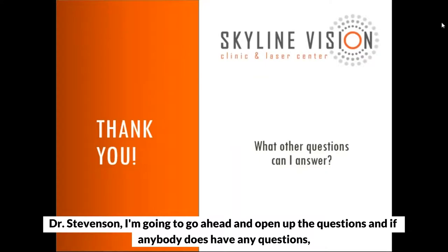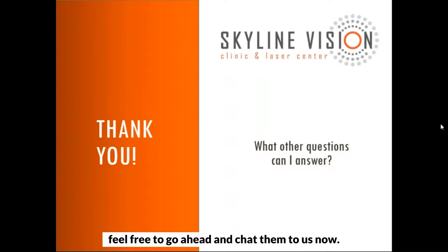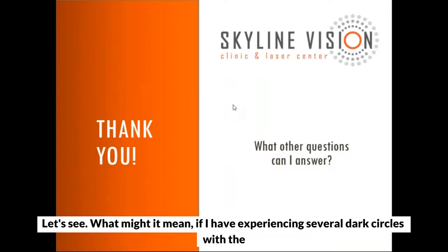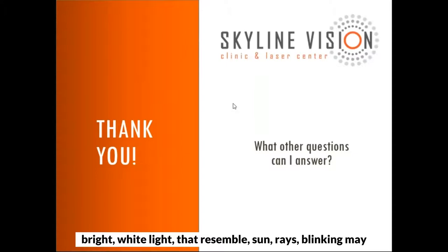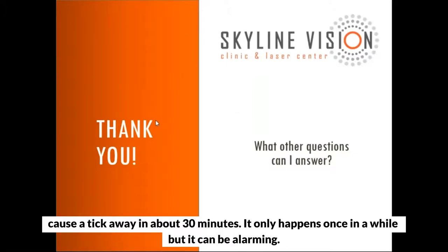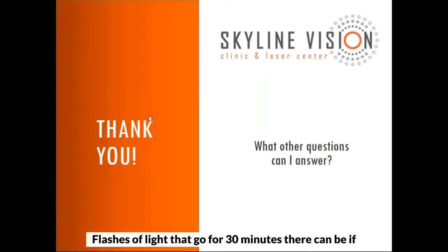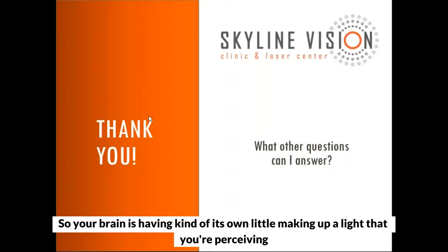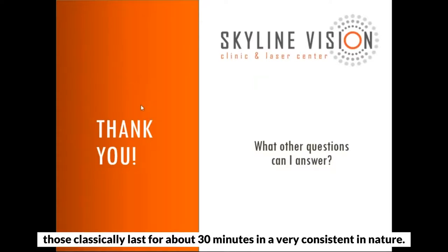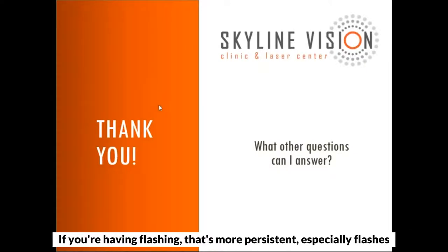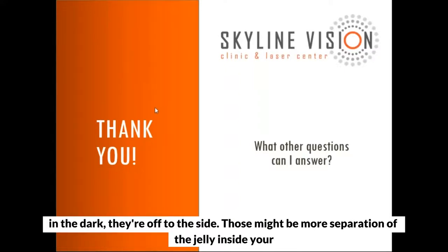Let's open up the questions. Someone is asking: what might it mean if they're experiencing several dark circles with bright white light that resembles sun rays, blinking may cause it to tick away in about 30 minutes, and it only happens once in a while but can be alarming. So these are flashes of light that go for 30 minutes. If it's a consistent pattern, those can be ocular migraines — your brain is making up light that you're perceiving. Those classically last about 30 minutes and are very consistent in nature. If you're having flashing that's more persistent, especially flashes in the dark off to the side, those might be more concerning.